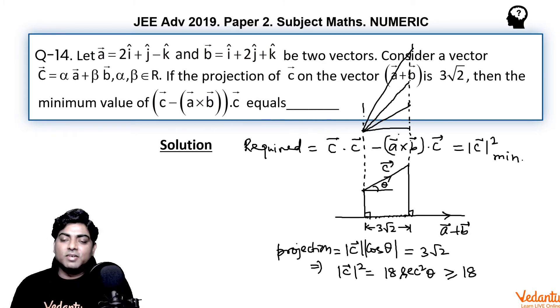So the minimum projection you will get when vector c is parallel to the vector a + b. In that manner, the minimum value of mod c would be equal to the projection. In that case, the mod c is equal to the projection, which is 3 root 2, so mod c squared would be 3 root 2 squared, that is 18. I hope you understood it.